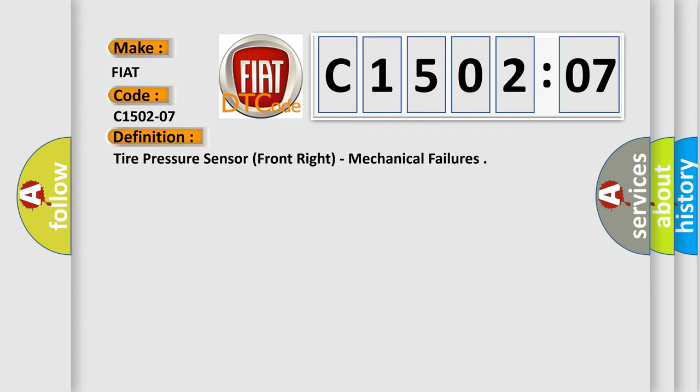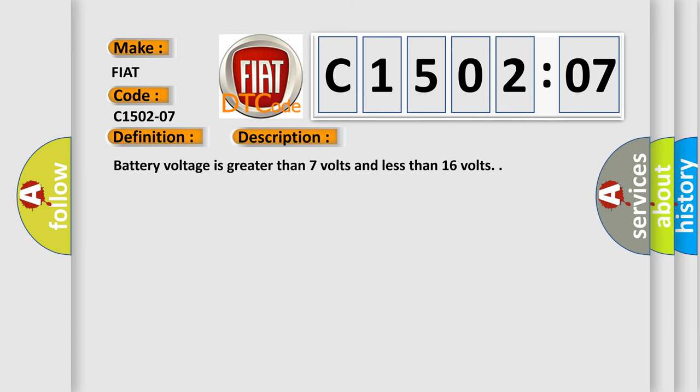The basic definition is: Tire pressure sensor front right, mechanical failures. And now this is a short description of this DTC code. Battery voltage is greater than 7 volts and less than 16 volts.